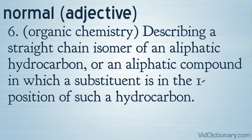Definition 6: Organic chemistry — describing a straight chain isomer of an aliphatic hydrocarbon, or an aliphatic compound in which a substituent is in the one position of such a hydrocarbon.